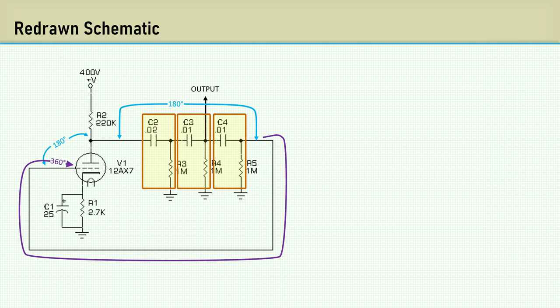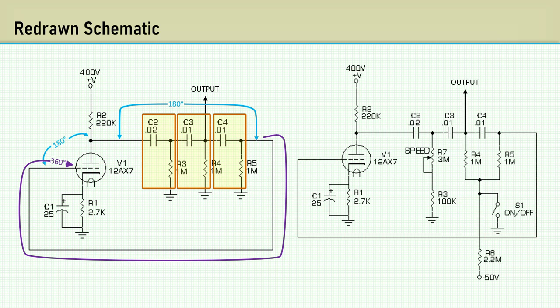Here's the redrawn schematic of the entire oscillator. One of the shunt resistances is made variable to adjust the speed or frequency of the oscillation. An on-off foot switch is used.